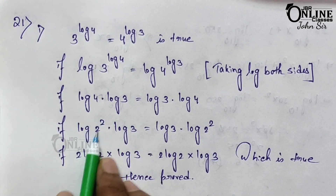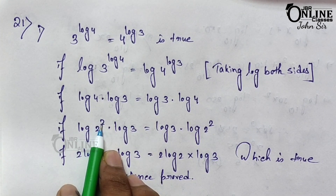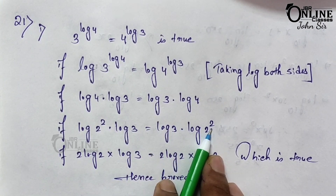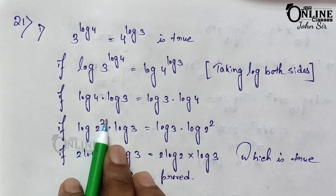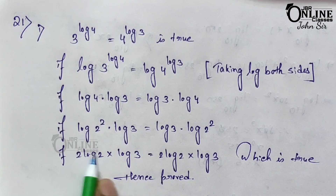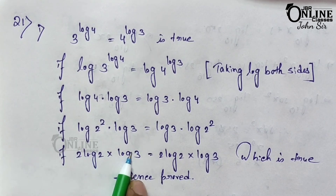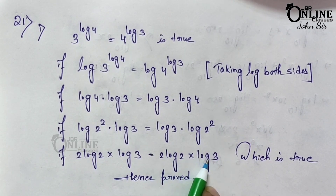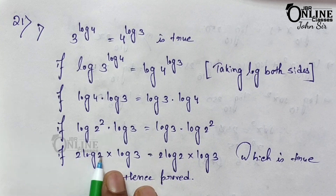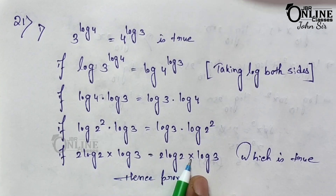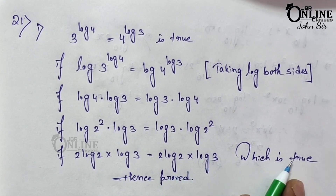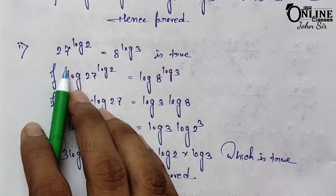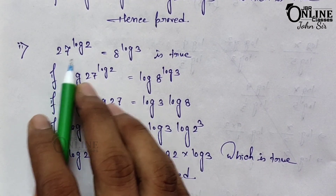Now log 4 means log(2²), which gives 2 log 2. So left side becomes 2 log 2 into log 3, and right side also gives 2 log 2 into log 3. The right-hand side and left-hand side are both equal, which is true. Hence proved.